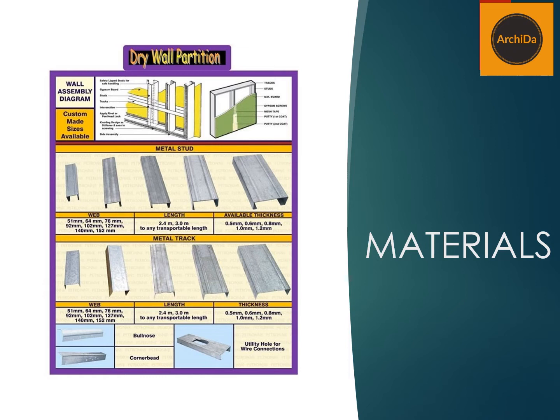Available thicknesses are 0.5, 0.6, 0.8, and so on. That goes the same way for the metal trap. If you notice the picture on the right, lower right, you can see utility holes for wire connections. These are usually used for vertical studdings, because that is where you will have your conduit pass through.